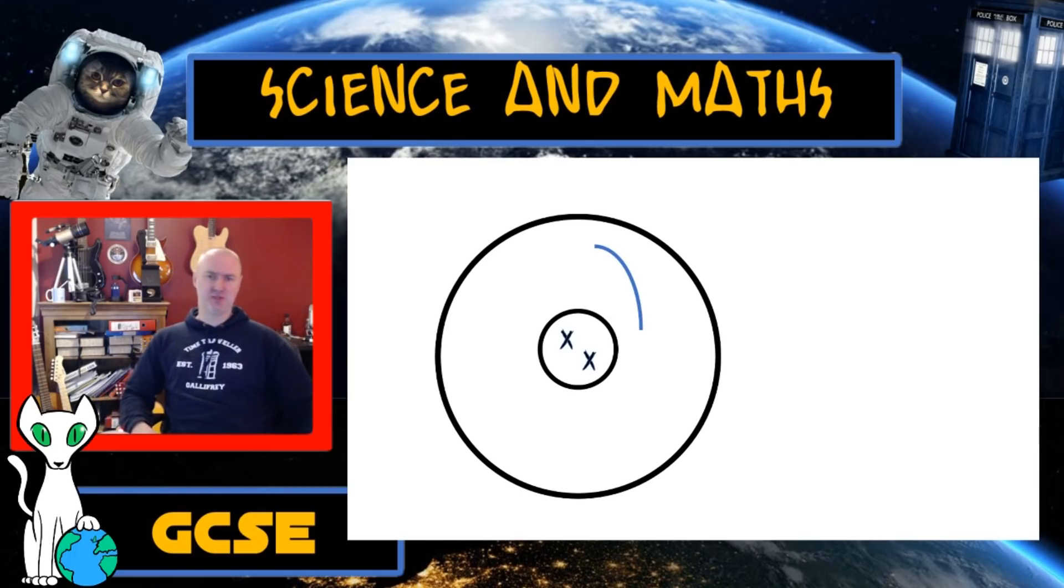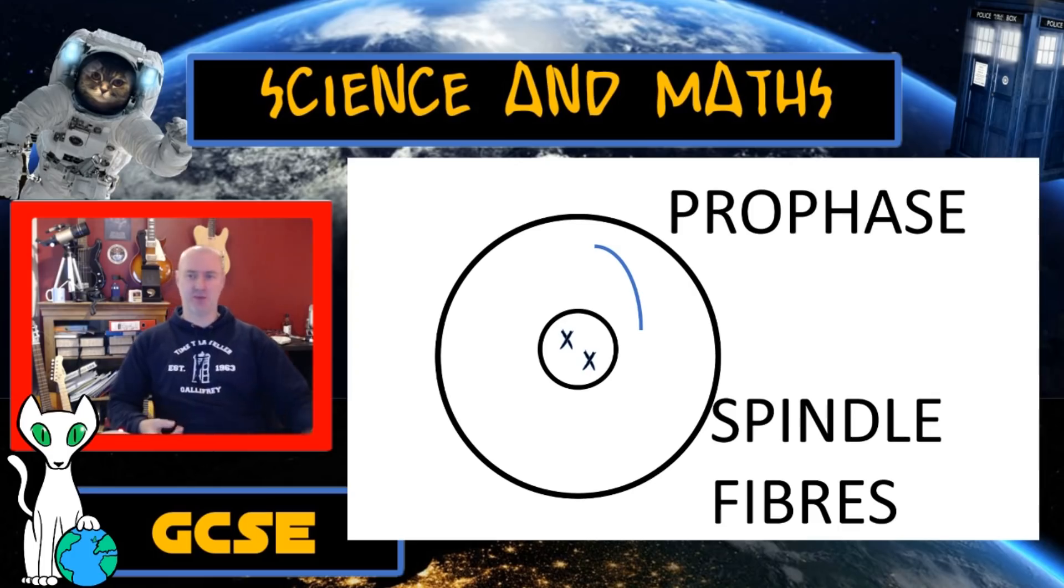Another mark of prophase is that we start to produce these short string-like structures that we're going to call spindle fibers. Now, once the production of those has begun and the nuclear membrane has properly broken down, that's the end of prophase.